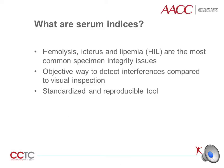Hemolysis, Icterus, and Lipemia, also commonly known as HIL, are the most common specimen integrity issues that can interfere with laboratory tests and may lead to erroneous results and interpretations, and ultimately to inappropriate medical decisions. HIL indices are an objective way to detect interferences compared to the traditional practice of visual inspection. Visual inspection is subjective, unreliable, and time-consuming, whereas measurements of serum indices are available on most modern-day chemistry analyzers and provide a standardized and reproducible tool to estimate interferences.